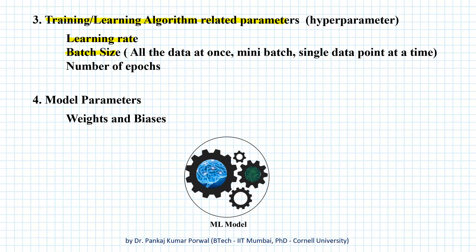We can use one batch at a time for training our model, or we can use a single data point at a time to train our model. We also have to decide the number of epochs, that is how many rounds of training we have to perform for our network.